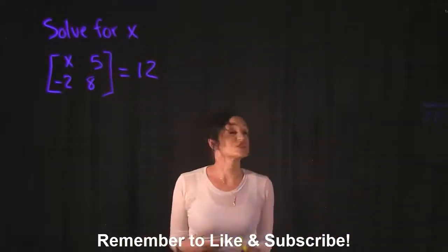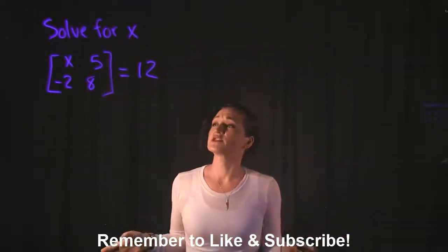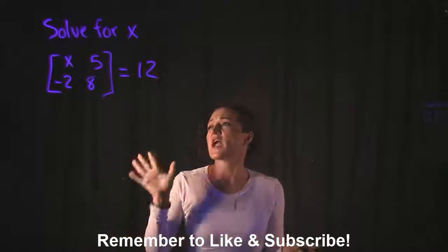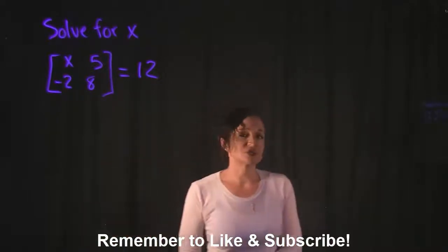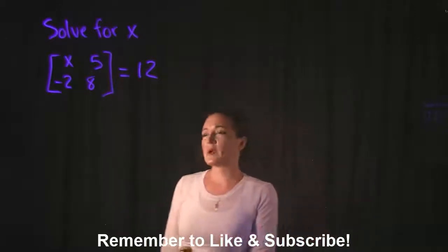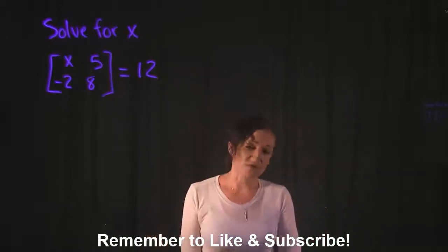For this video, it asks us to solve for x and they gave us a matrix where we have x and 5 in the first row. We have a negative 2 and an 8, and this is set equal to 12. So we have a 2 by 2 matrix here and we need to solve this for x.